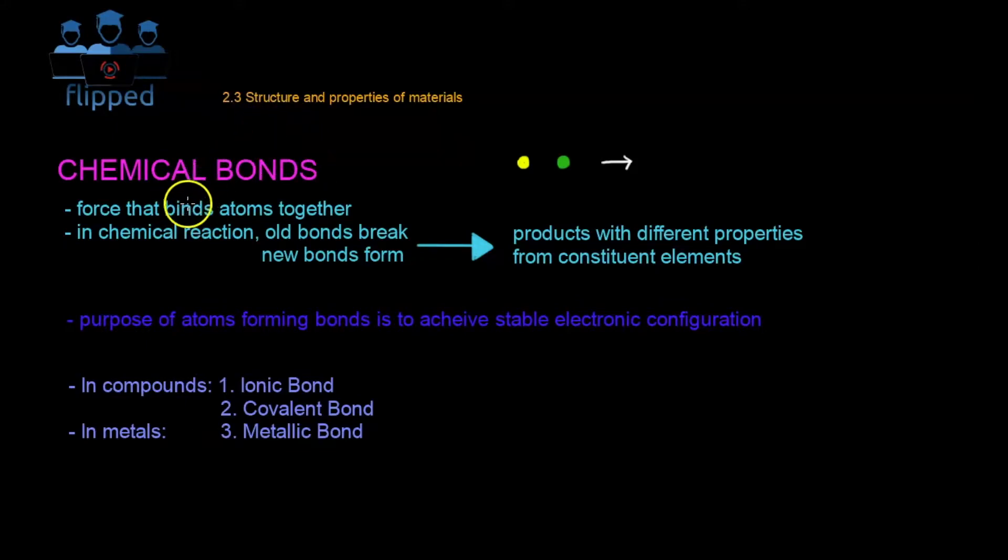Chemical bonds is really just a force that binds atoms together. For example, I have a yellow atom here, a green atom here. There exists this force, if the conditions are right, to bind them together. So what will happen is something like this - they will be bonded together now with probably a single bond here. So this one now becomes a compound, as we learned in the previous video. Basically it's just a force, it's invisible, you cannot see, but it exists - it just binds them together.